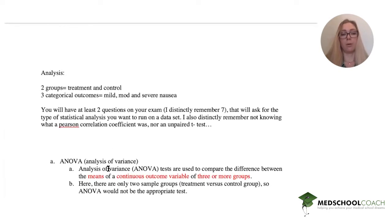So let's start with ANOVA. That's analysis of variance. These tests are used to compare the difference between the means between continuous outcome variables of three or more groups. However, there's only two sample groups here, a treatment and a control, so the ANOVA is not the appropriate test.